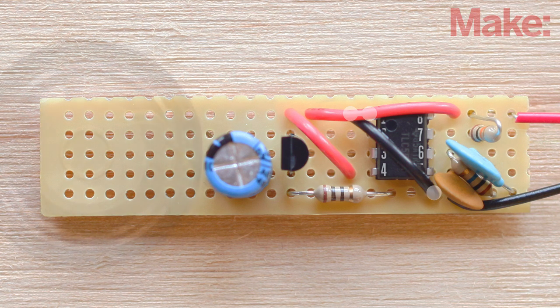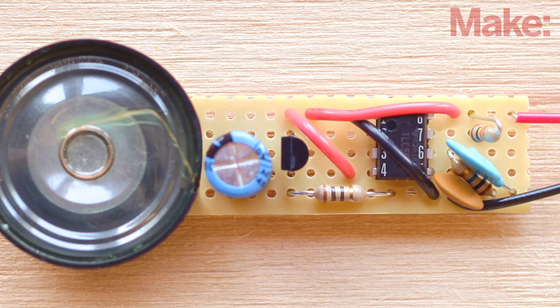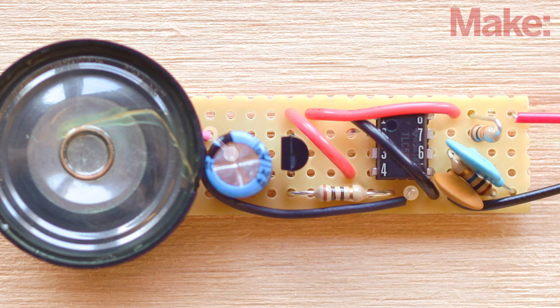Using the super mount tape, attach the speaker to the far end of the perfboard and connect its leads to the circuit. The negative lead goes to the ground rail and the positive lead is soldered to the negative lead of the electrolytic capacitor.